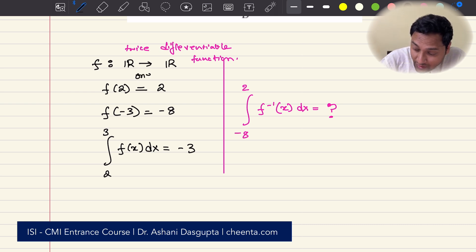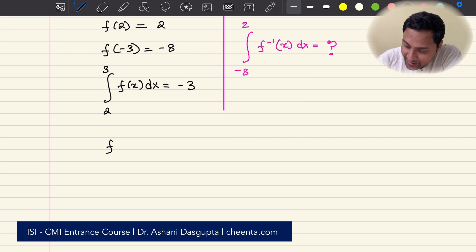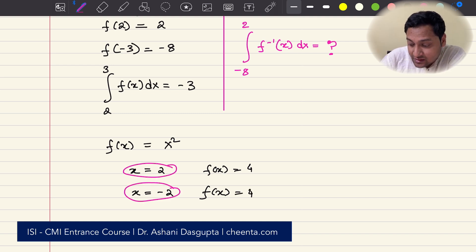And the second thing is, f is one-to-one. f is a one-to-one function. So it does not have two values of x giving one value of y. For example, f of x equal to x square is not a one-to-one function. Why? Because for x equal to 2, you get f(x) equals to 4. And for x equals to minus 2, f(x) is still 4. So two different values of x produces same value of f of x. Therefore, it is not a one-to-one function.